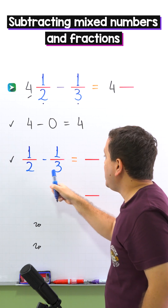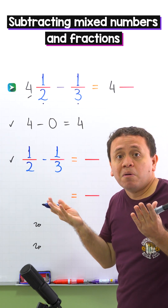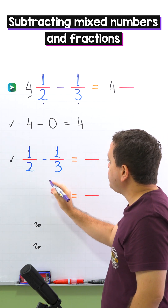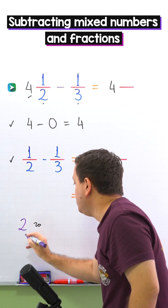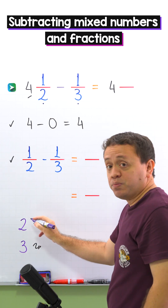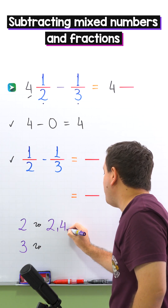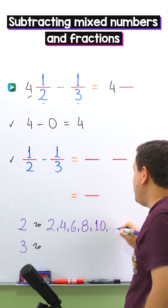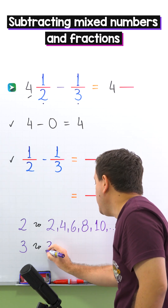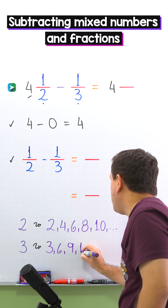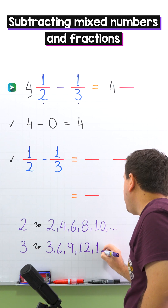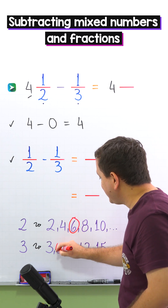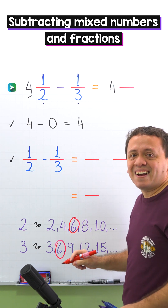These two fractions have different denominators. To find the difference we need the least common multiple of the denominators, or the least common denominator. The denominators are two and three. The first multiples of two are 2, 4, 6, 8, 10, and so on. The first multiples of three are 3, 6, 9, 12, 15, and so on. The smallest number on both lists is six, so six is the least common denominator.